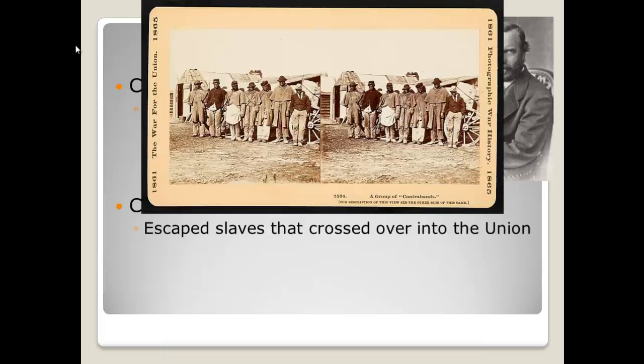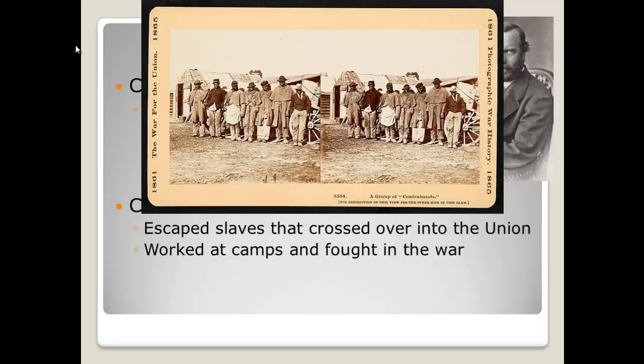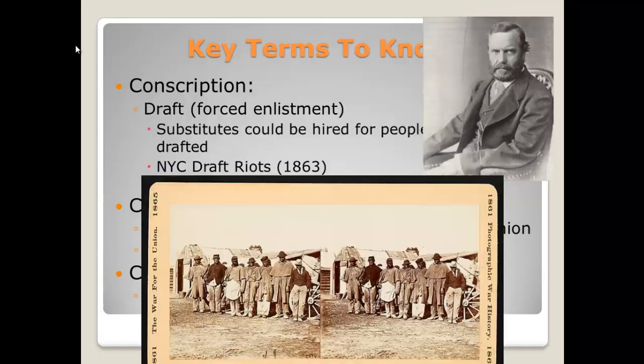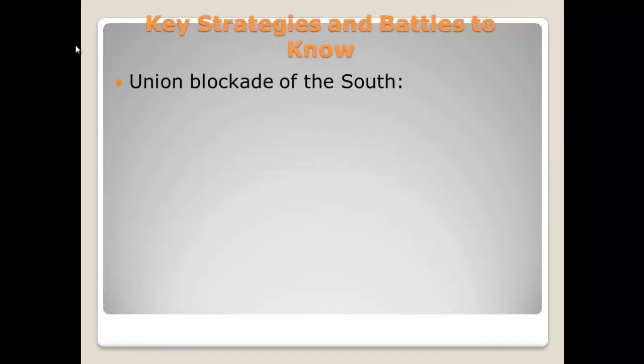Contraband is another term you should know — these are escaped slaves that crossed over into the Union from the South. They worked at camps and often fought in the war on behalf of the Union. Finally, Copperheads were Democrats, usually in the North, that spoke out against the war — they were against going to war with the South.